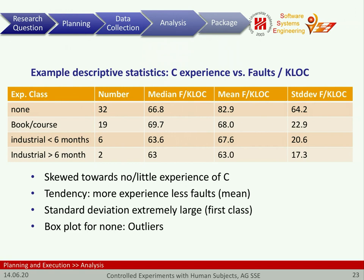Here's the data from the running example. Have a look at these different categories: the experience people have — none, they had a book or course, they have a few months of industrial experience, and they have more than a few months of industrial experience. How many people are in each category? We see that 'none' is larger than all the others combined. Here's the median, the mean, and the standard deviation. If we just look at this data, the median for the no-experience group is actually smaller than for the course group.